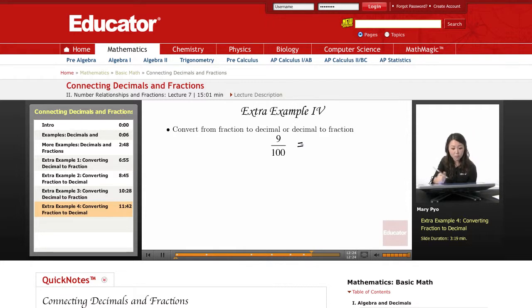So in order to write this as a decimal, if I have 9 pennies, how much do I have? I have 9 cents, which is written like that. So 9 out of 100 is the same thing as 0.09.